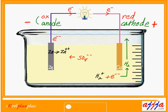Let me talk about SRP and SOP — which is standard reduction potential. The bottom one is standard oxidation potential. You can use either one. The only difference is positive and negative; number-wise they are the same.